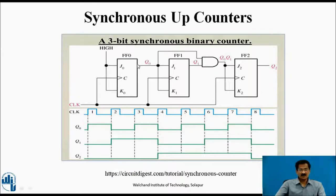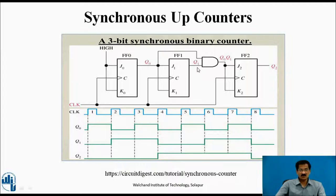When Q0, Q1, and Q2 are all 1, 1, 1 — that is the maximum count — at the arrival of the next clock pulse, Q0 toggles to 0, Q1 also toggles to 0, and Q2 also toggles to 0, because Q0 was previously 1. So after the count 1, 1, 1, the next count will be 0, 0, 0 — that is, the counter will be reset.